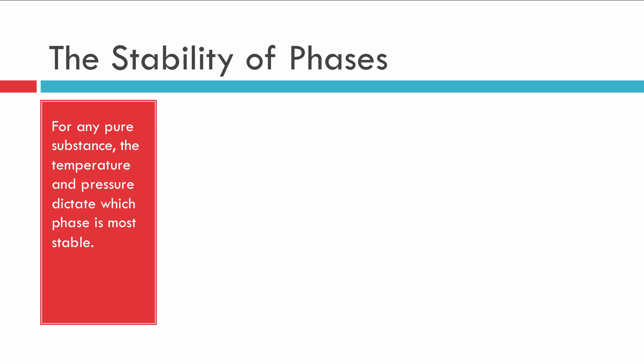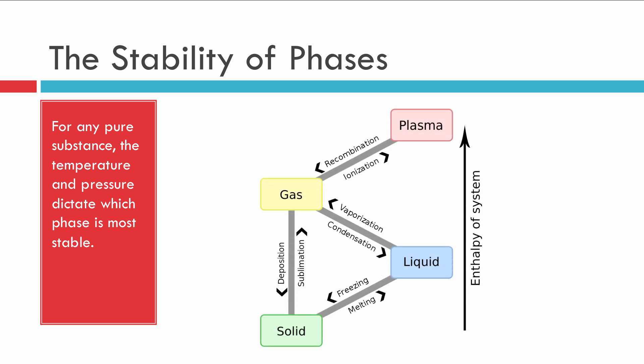Each of the phases of matter that we apply to pure systems and pure materials tends to have a particular temperature and pressure in which it is the most stable. When we look at a solid, liquid, gas, or even a plasma, these particular phases will be more stable than others. For water, for example, liquid water at 25°C and one atmosphere pressure, the liquid phase is the most stable, and we expect water to be in that phase.